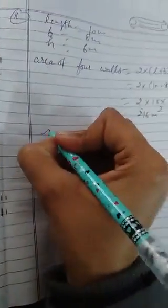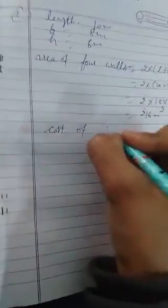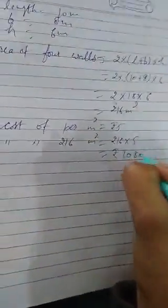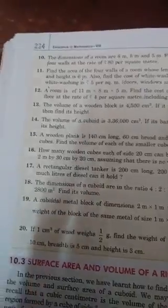Cost of per meter square is given rupees 5. We have to find cost of 216 meter square. Multiply 216 with 5. That is equal to rupees 1080. Question number 12 is same as 11th question.